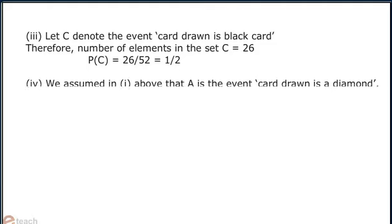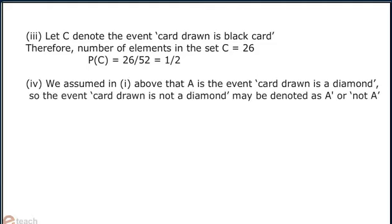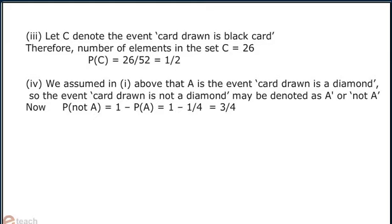4. We assumed in part 1 above that A is the event 'card drawn is a diamond'. So the event 'card drawn is not a diamond' may be denoted by A', or not A. Now probability of not A is equal to 1 minus probability of A, which is equal to 1 minus 1 by 4, that is 3 by 4.